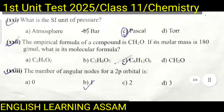Question number twenty-one: What is the SI unit of pressure? A. Atmosphere, B. Bar, C. Pascal, D. Torr. The correct answer is C — Pascal.